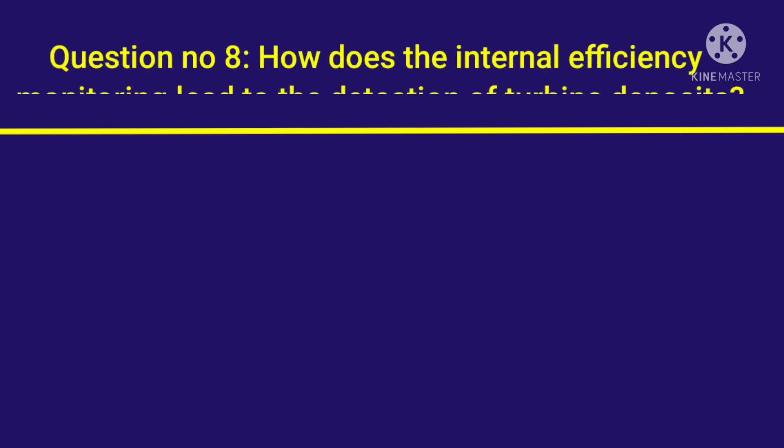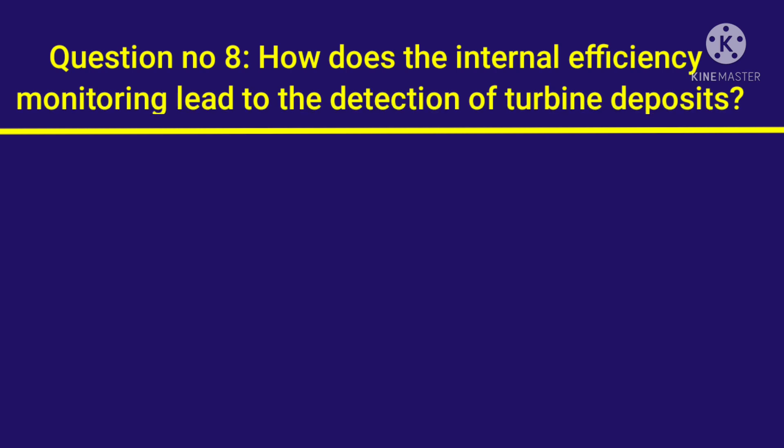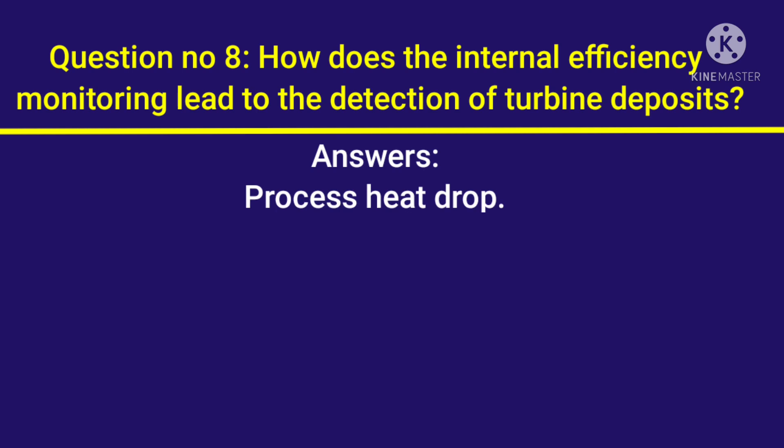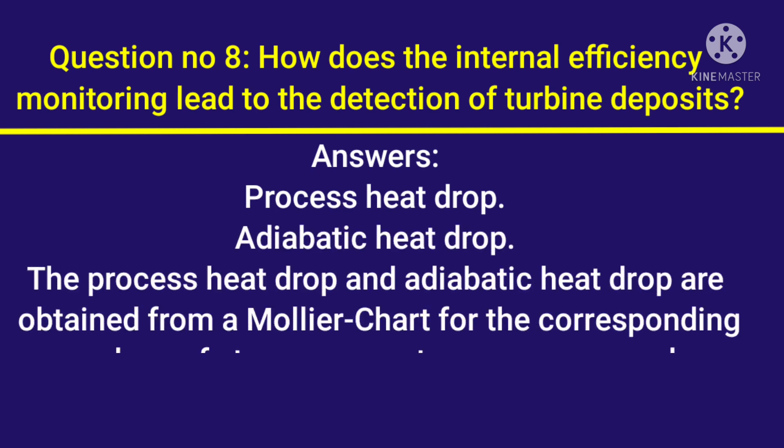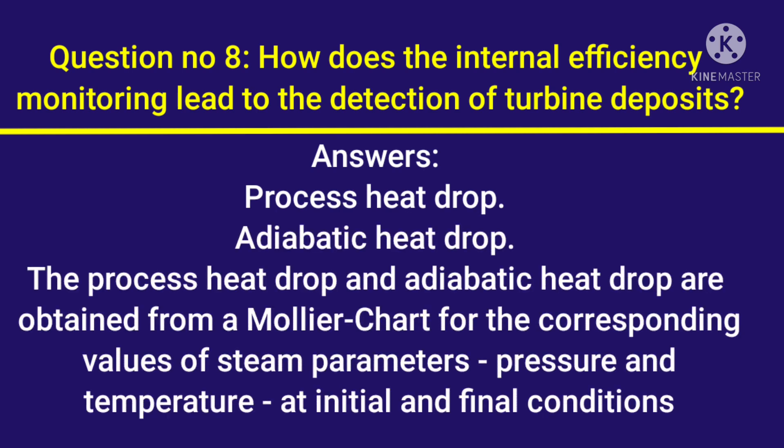Question number 8: How does internal efficiency monitoring lead to the detection of turbine deposits? Answer: The process heat drop and adiabatic heat drop are obtained from a Mollier chart for the corresponding values of steam parameters — pressure and temperature — at initial and final conditions.